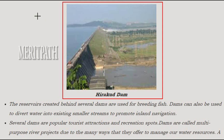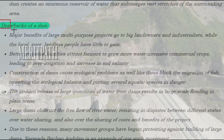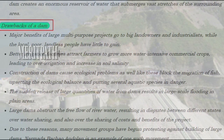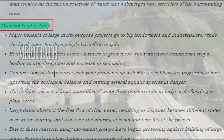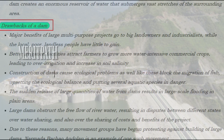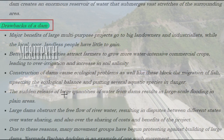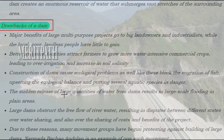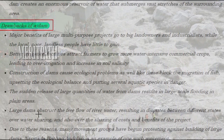Dams are multi-purpose river projects due to the many ways they help manage water resources. However, a dam creates an enormous reservoir that submerges vast stretches of the surrounding area. Major benefits of large multi-purpose projects go to big landowners and industrialists, while local poor landless people have little to gain. Better irrigation facilities attract farmers to grow more water-intensive commercial crops, leading to over-irrigation and increasing soil salinity. Construction of dams causes ecological problems, such as blocking the migration of fish, upsetting ecological balance, and putting several aquatic species in danger. The sudden release of large quantities of water from dams results in large-scale flooding in plain areas.